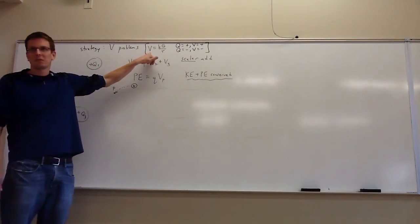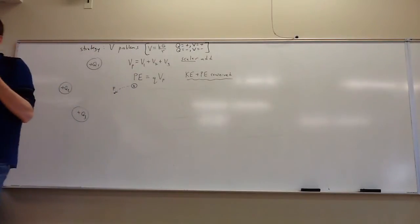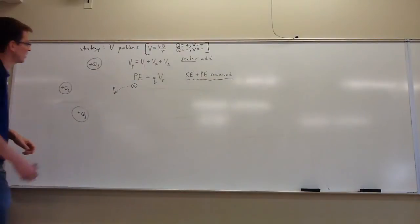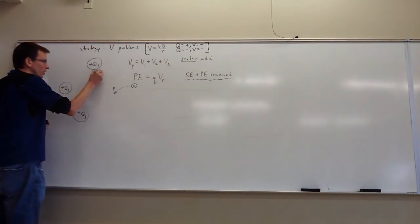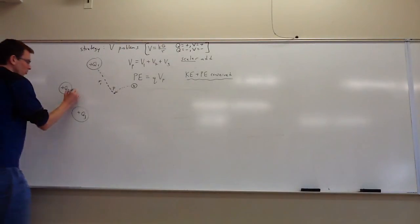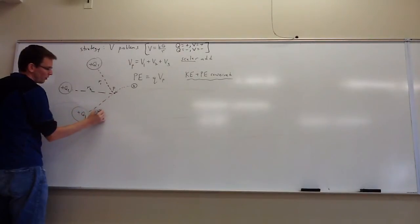The formula for figuring out the voltage of a point charge is KQ over R. All you have to do is say what is the charge that's making this voltage and how far are you away from it. If you want to find the voltage contributed by charge one, you'd have to find R1 — that's a distance, it's positive, no need to worry about sign. For Q2 you'd find R2, and R3.